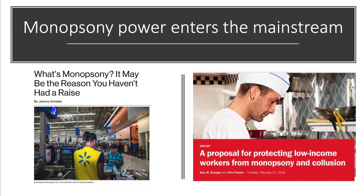Monopsony power is now becoming a mainstream part of economic thinking. According to the late and great economist Alan Krueger, labour market monopsonisation and the exercise of employer market power is now becoming very dominant, particularly amongst those supersized companies like Apple, Google, and Amazon, and may actually contribute to wage stagnation, rising inequality, and perhaps in the long term to declining productivity.